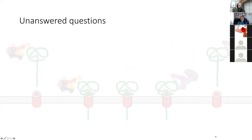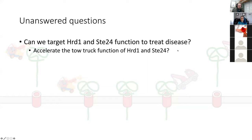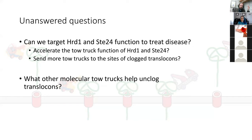This work leaves us with several unanswered questions that our lab is pursuing. First, translocon clogging has been linked to cholesterol-related disease, type 2 diabetes, and neurodegeneration. Can we target the homologues — the human versions of HERD1 and C24 — to treat disease? Maybe we could design drugs that enhance the function of existing HERD1 and C24 tow truck molecules so that they work more rapidly and efficiently. Or maybe we could send more tow trucks to the sites of clogged translocons, or take a page out of the Moderna and Pfizer handbook and deliver mRNA molecules that encode tow trucks to the cells that need them. We also observe that even when HERD1 and C24 are both missing, translocon-clogging proteins are still destroyed at a slower rate, suggesting still other redundantly functioning tow trucks may exist that we would like to identify.